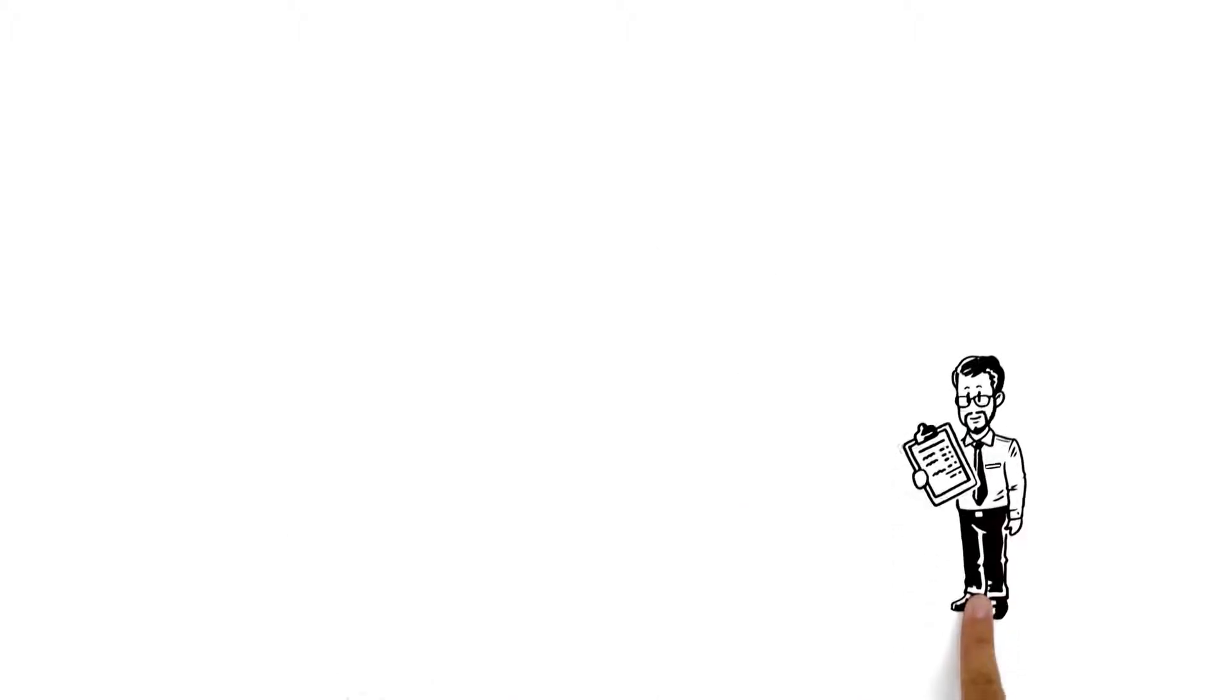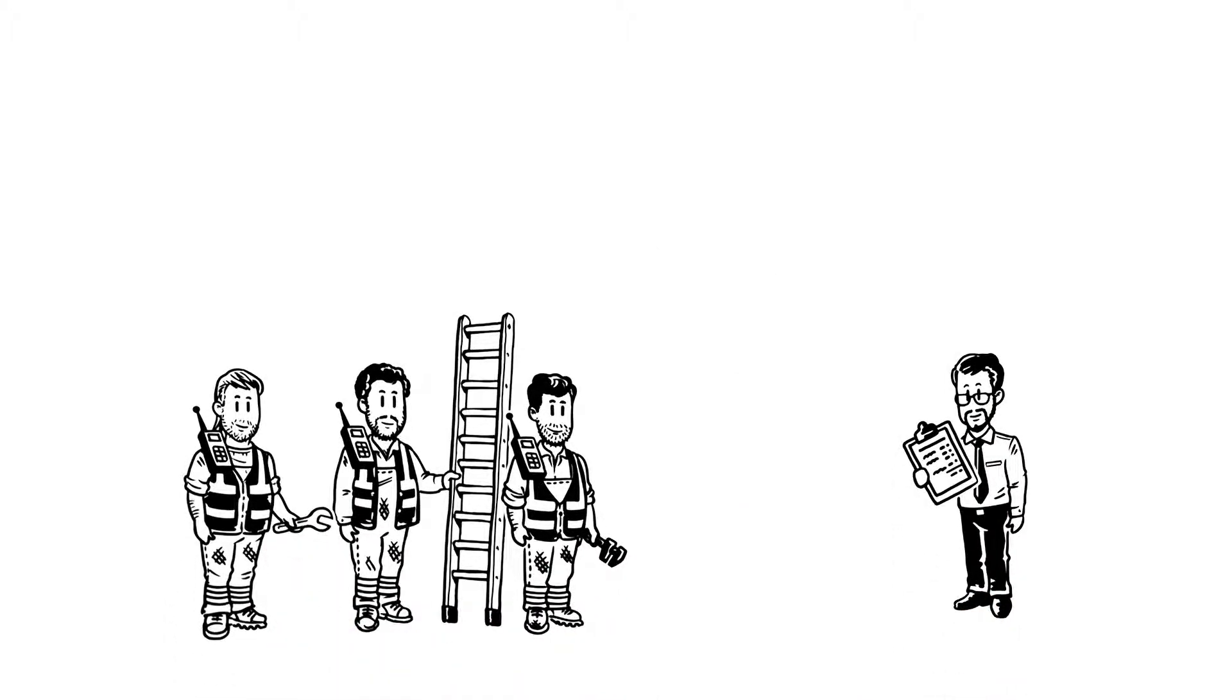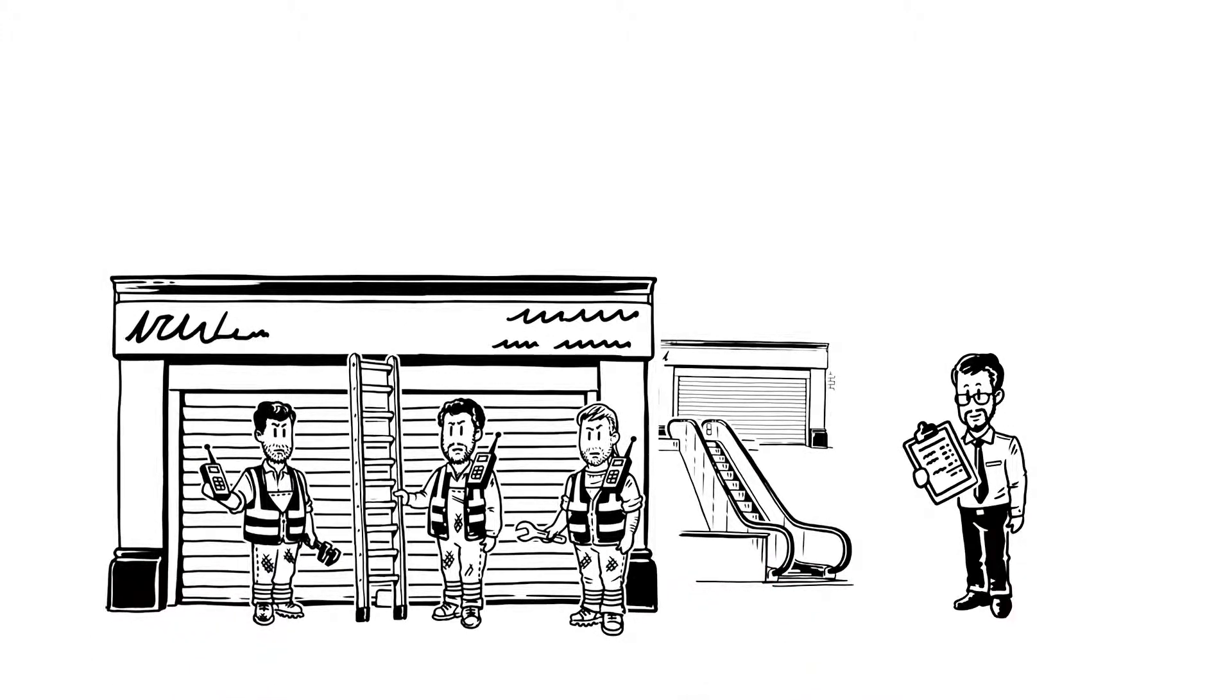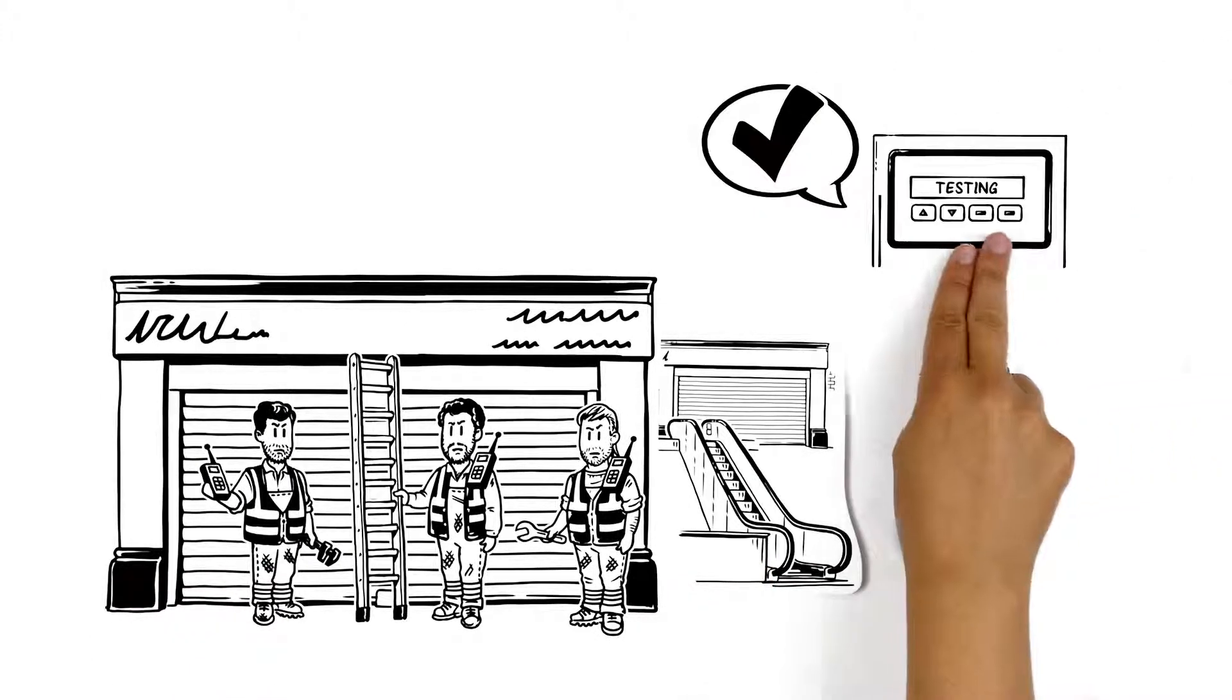Whereas before, Martin would need his team to go from shop to shop to test each flow switch manually, assuming everyone is available, ZoneCheck Addressable can complete testing automatically in the background.